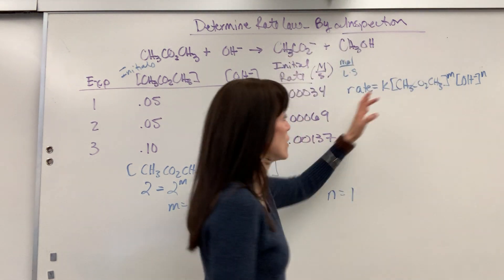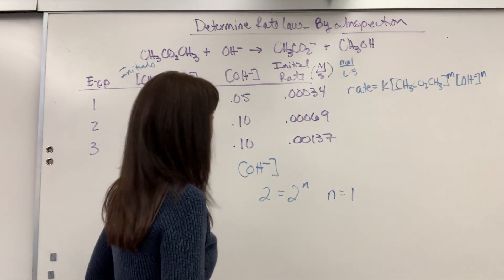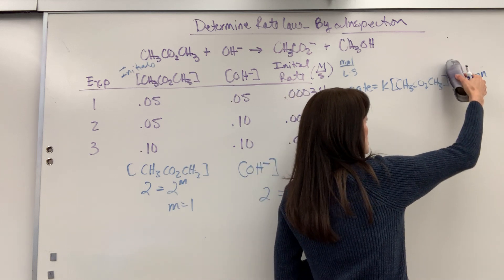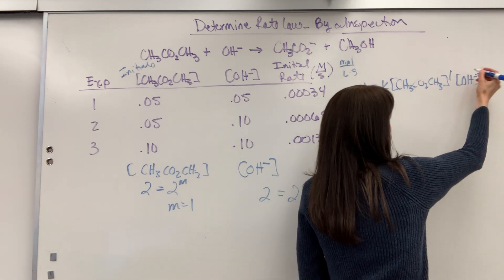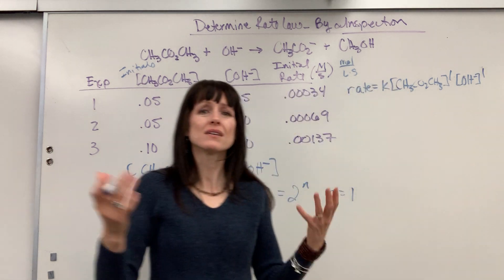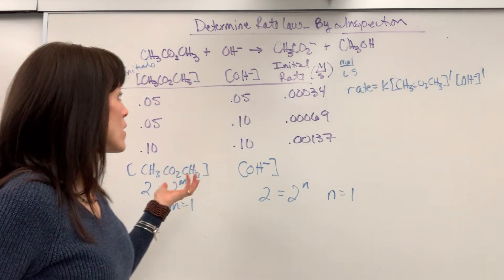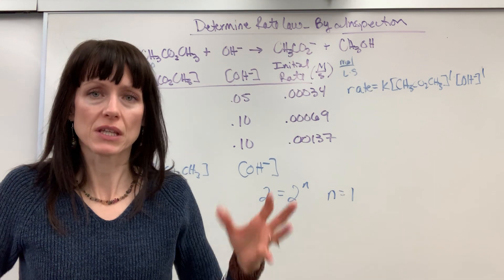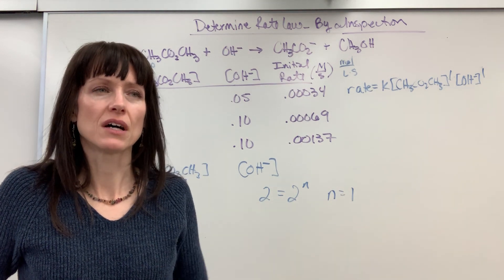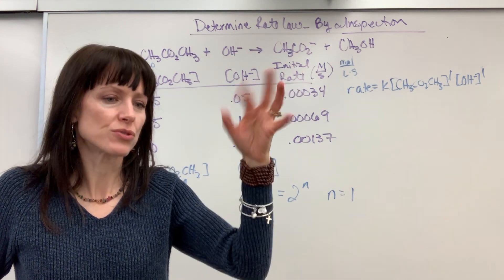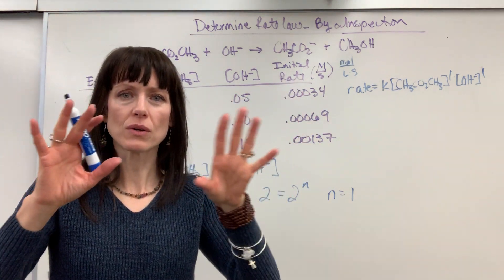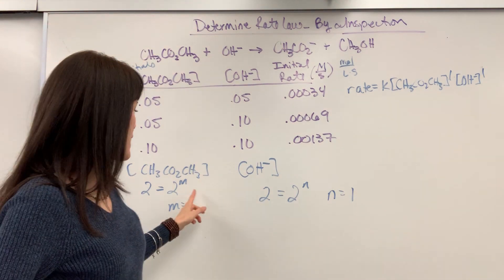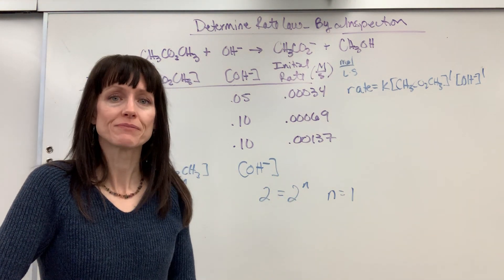Okay, so over here I can go ahead and change my M and N to a first order and a first order. So there's looking at the overall rate law by inspection. Given your data, you're asking yourself, if I double, if I triple, if I quadruple concentrations and rates, how do those interplay? So what does the exponent have to be? What's the order?